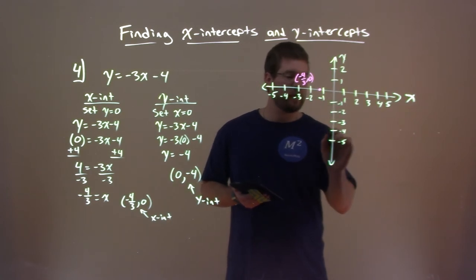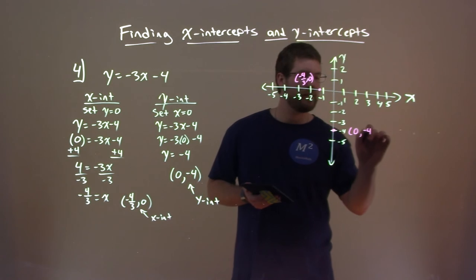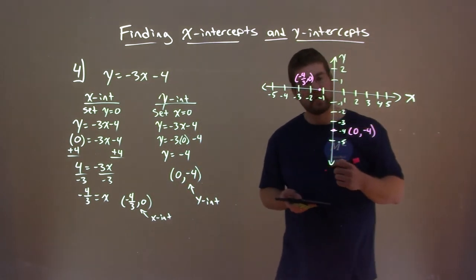Our y-intercept is zero, negative 4. A little easier. Zero for the x value, y is negative 4. There's our point. We have zero, negative 4 here.